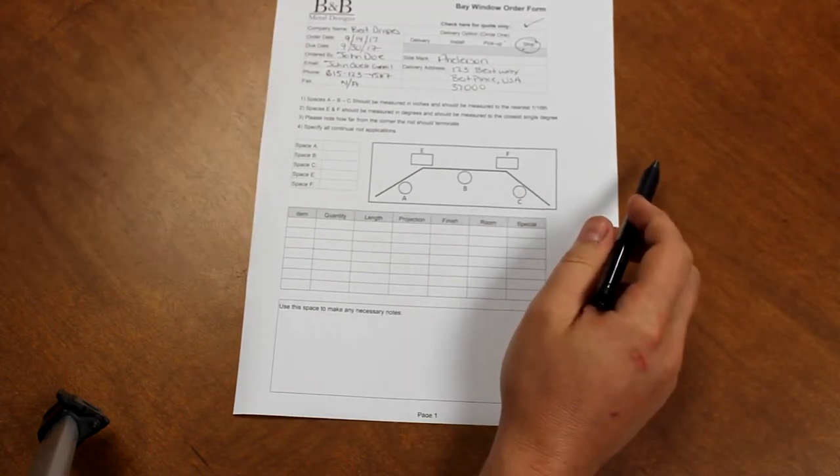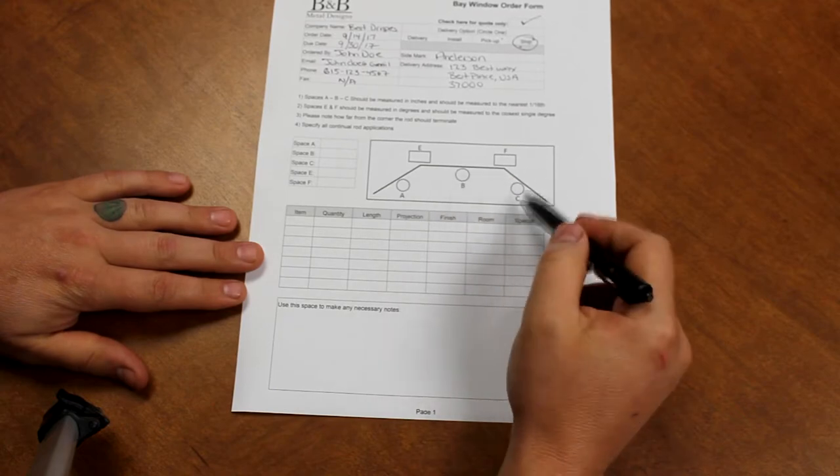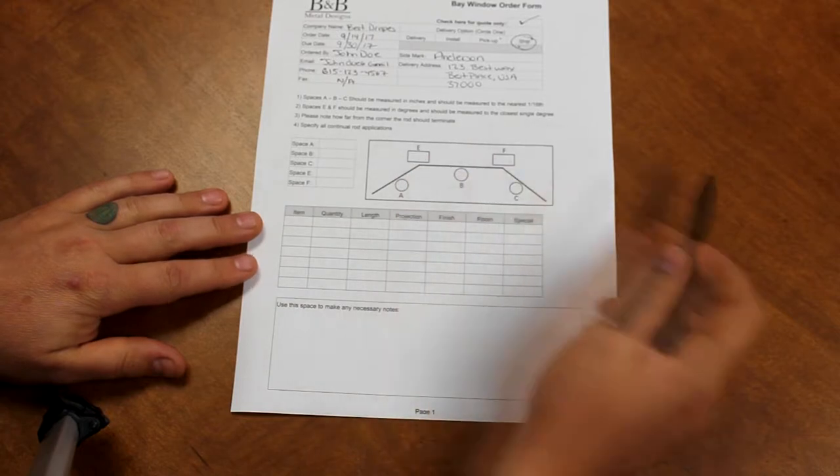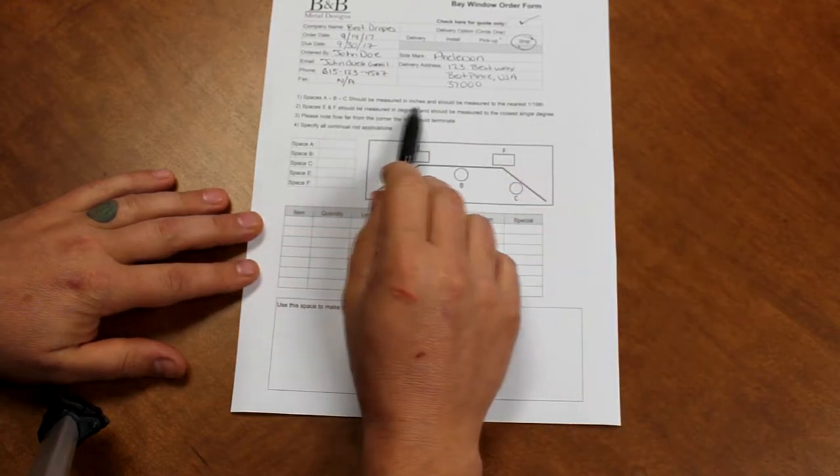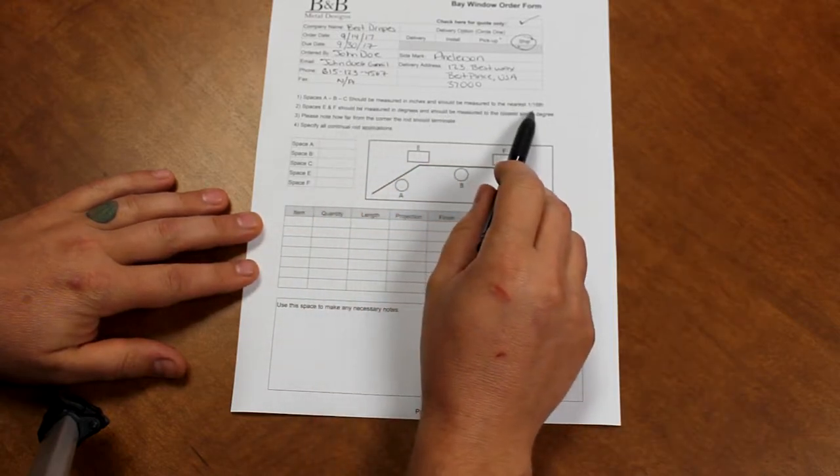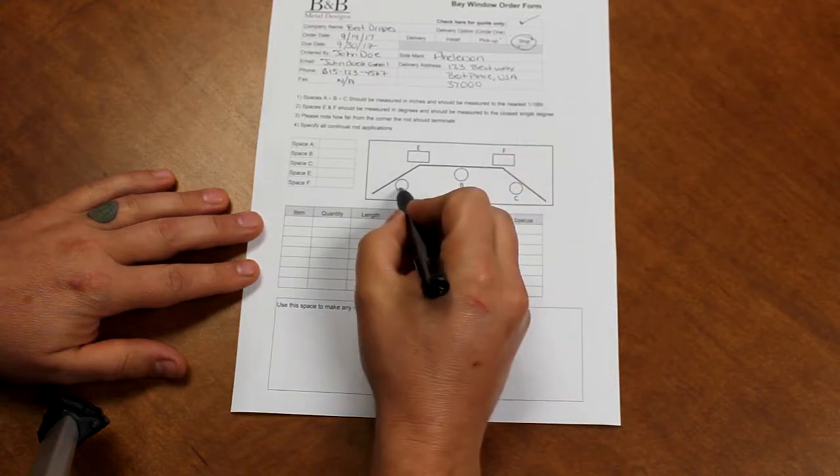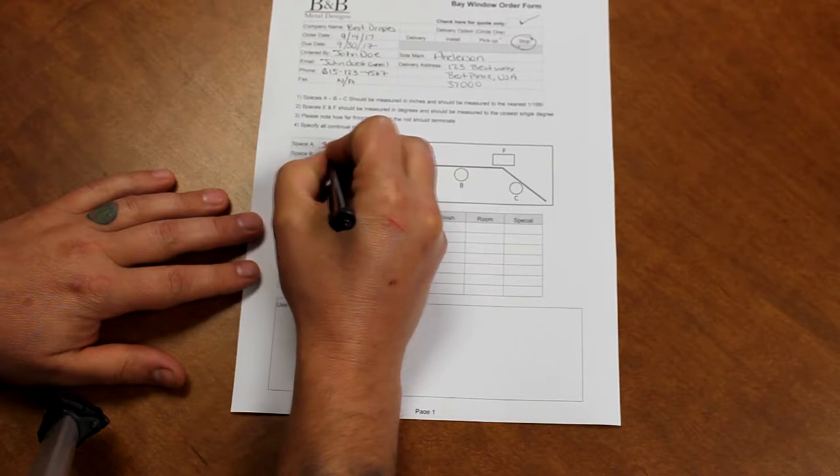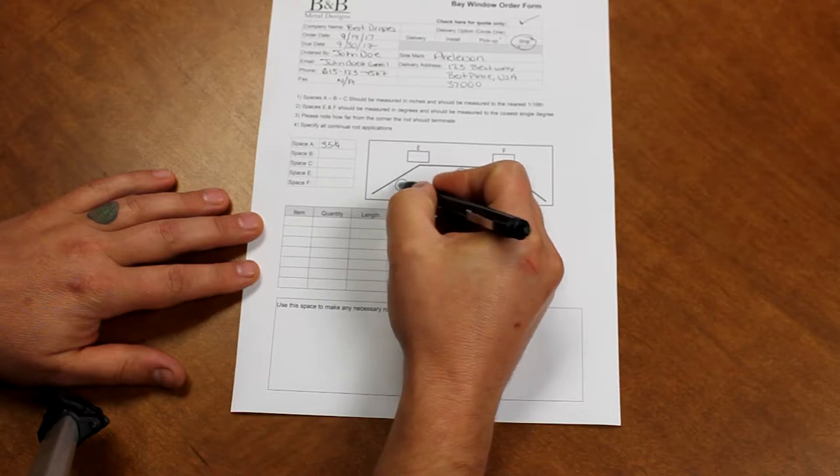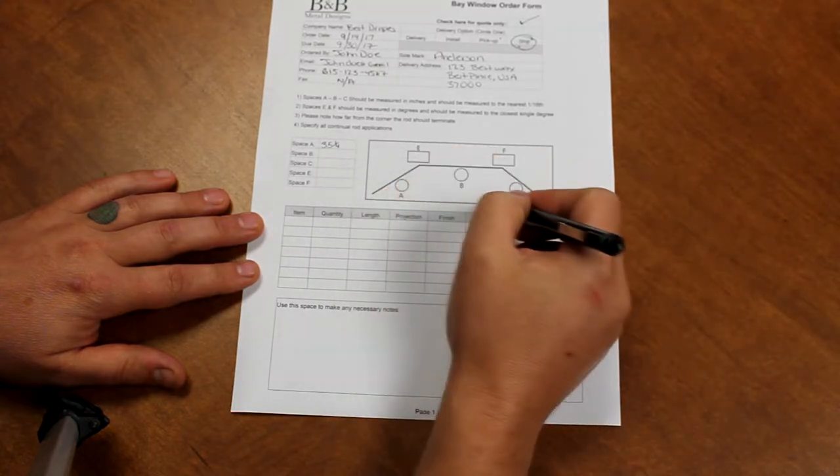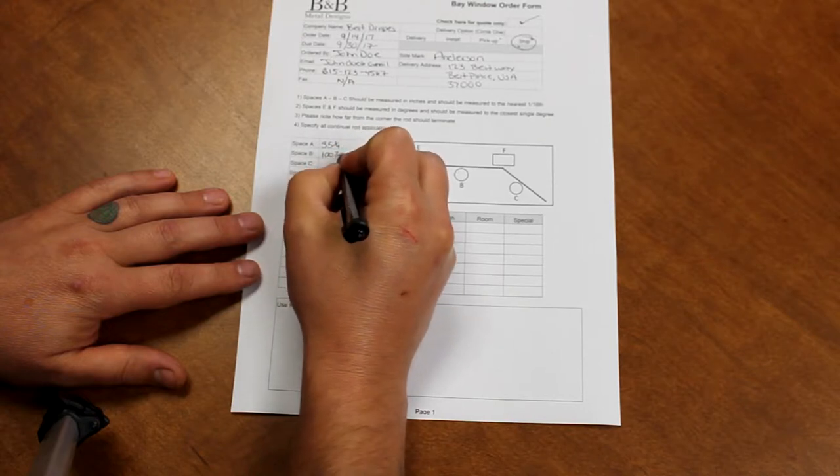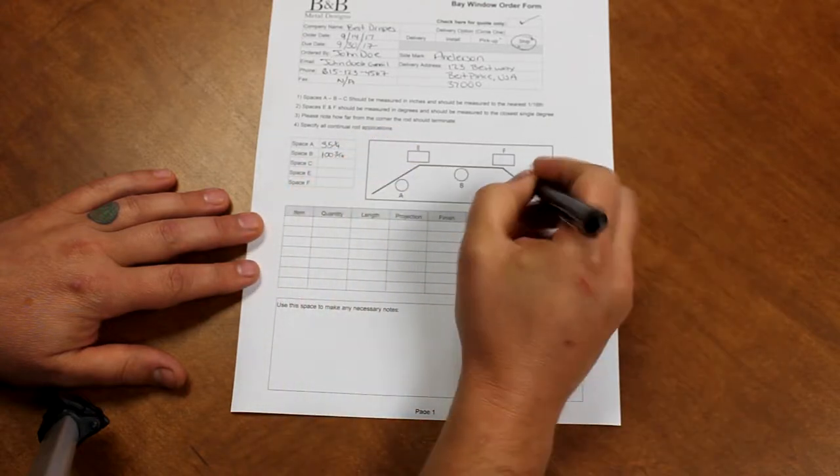If you notice we have spaces A, B, and C, E, and F. We will start with spaces A, B, and C. These should be measured in inches and should be measured to the nearest 1/16th. So space A is 35 and a quarter. You can use the space to the left to write that in or write within space A. Secondly we will go to space B and that measurement is 100 and 3/16ths. And space C is 36 and 3/8ths.